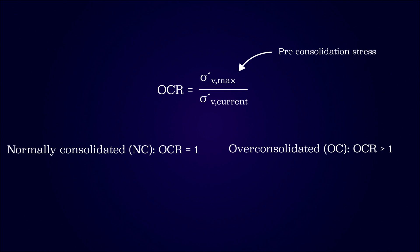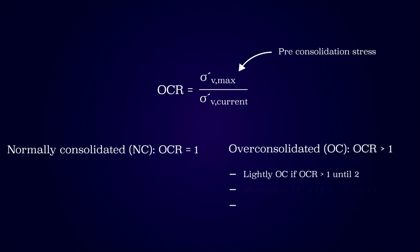Based on the value of the overconsolidation ratio, the soil is either lightly overconsolidated, moderately overconsolidated, or heavily overconsolidated. When soil is deposited naturally, it is normally consolidated.